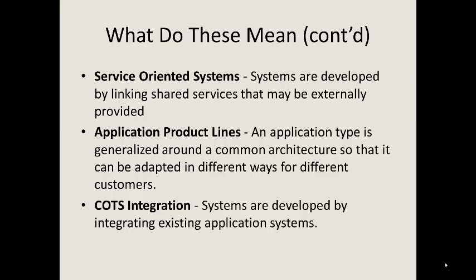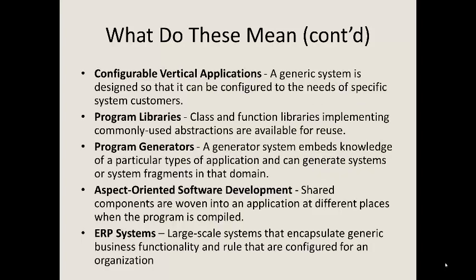Application product lines have a common architecture that can be adapted in different ways for different customers. Something like Sakai would probably fall into an application product line; PeopleSoft certainly does. Component off-the-shelf integration involves developing systems by integrating existing application systems. Configurable vertical applications are generic systems designed to be configured to the needs of specific customers — pretty close to an application product line with some minor semantic differences.